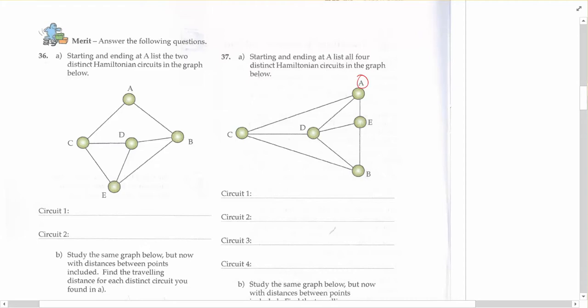So if I look for a circuit to complete this network, I might go from A to C, B, D, E, A, and I'll write it down in the order that I did it, A, C, B, D, E, A.